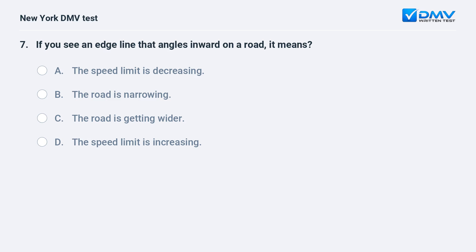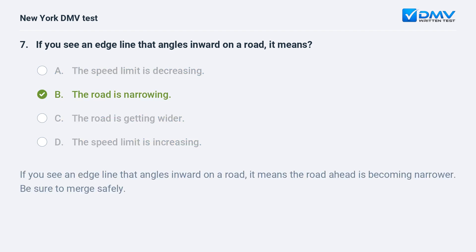If you see an edge line that angles inward on a road, it means the road ahead is becoming narrower. The road is narrowing — be sure to merge safely.